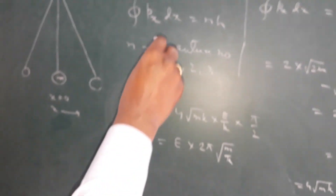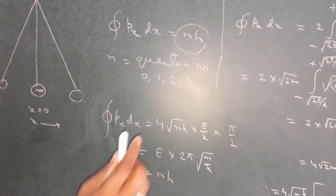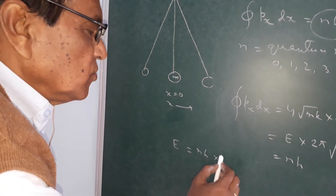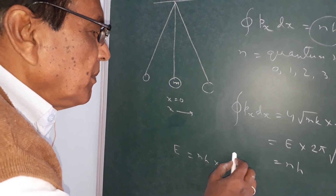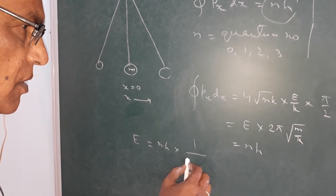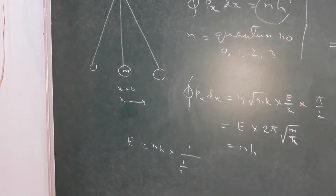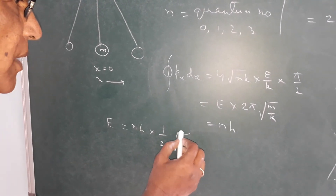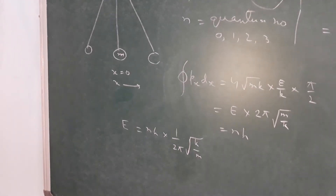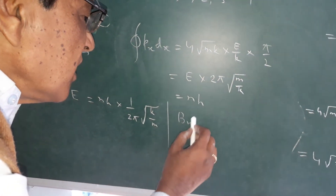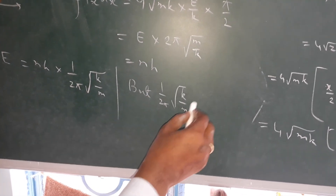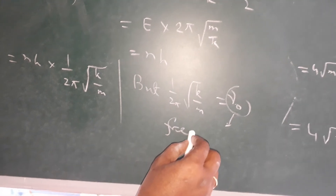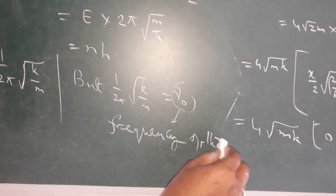According to the Wilson-Sommerfeld quantization rule, this equals nh. So the energy of the simple harmonic oscillator is E = nh × (1/2π)√(k/m). Since (1/2π)√(k/m) is the frequency ν₀ of the oscillator, the energy is E = nhν₀.